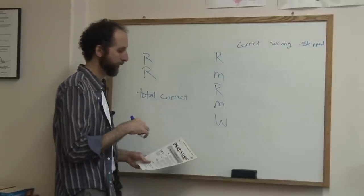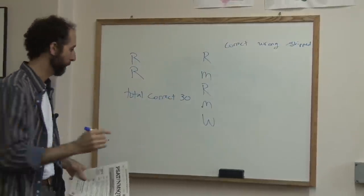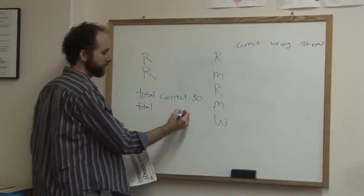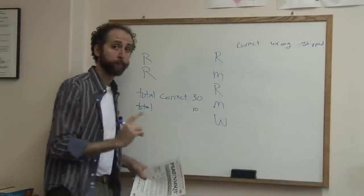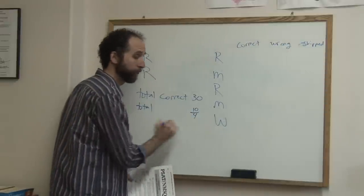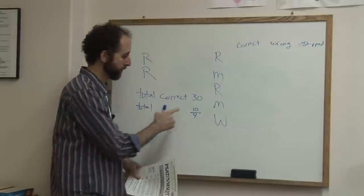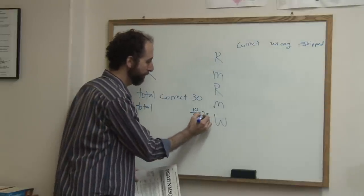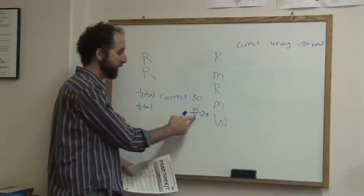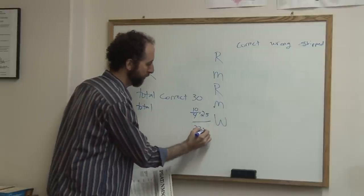Then you're going to add up how many you got wrong. Let's say you got a total of 30 correct and 10 wrong. You're going to take that 10 and divide it by 4. Just do that on your calculator and get a decimal. So 10 over 4 is 2.5. You're going to take 30, which is the amount correct, minus 2.5, which is going to be 27.5.